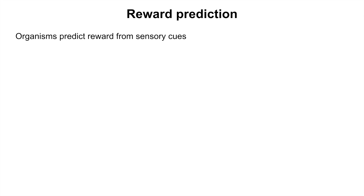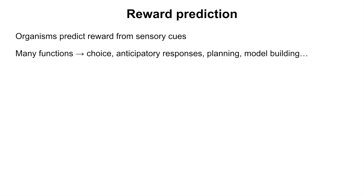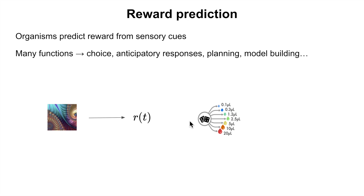We know that organisms need to predict reward from the sensory cues of their environment — for instance, salivating in preparation of a food reward. It may help with planning, with building causal models of the world that can help you exploit rewards from your environment. A classic setup might be to think of a stimulus, like a fractal image, leading to a reward at time t. Reward is a random variable, which may have different values — for instance, different magnitudes of juice — with a probability distribution attached to each magnitude.